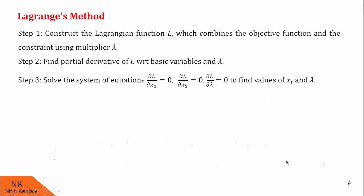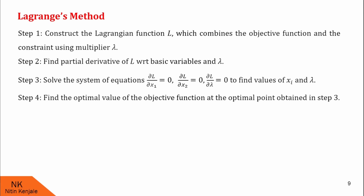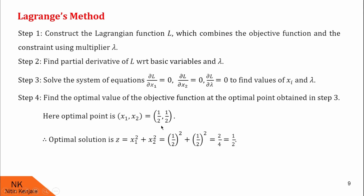Now we proceed to step 4. In step 4, we find the optimal value of the objective function at the optimal point obtained in step 3. The optimal point is x1 = 1/2, x2 = 1/2. Substituting this point into the objective function z = x1² + x2², we get the optimal value of z as 1/2.